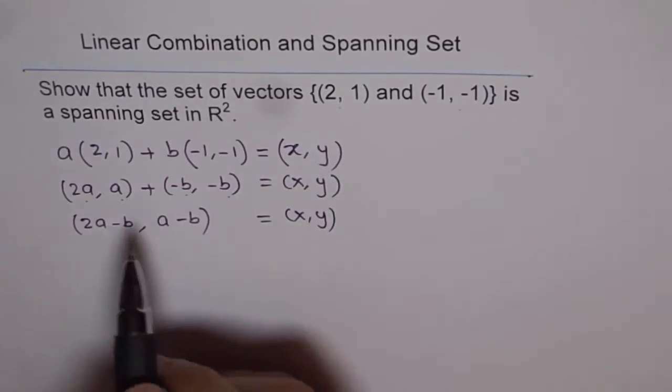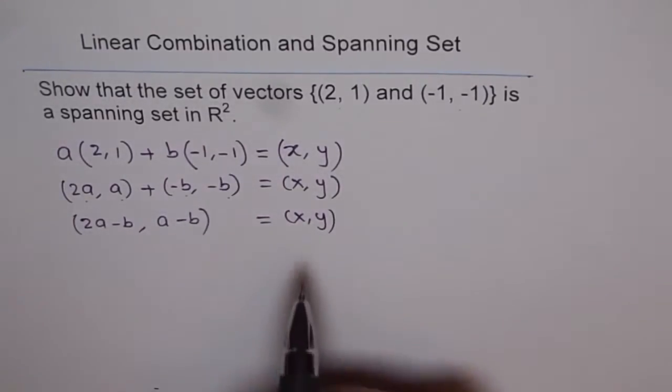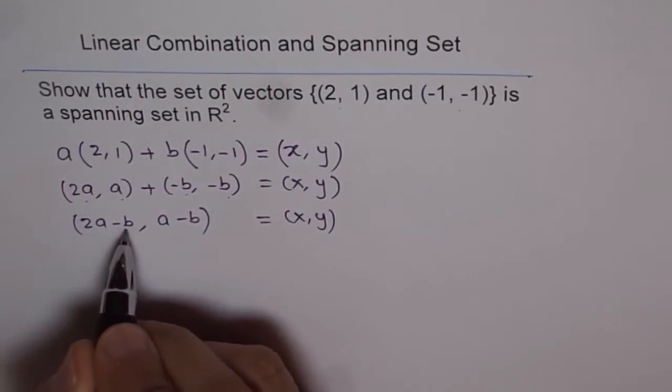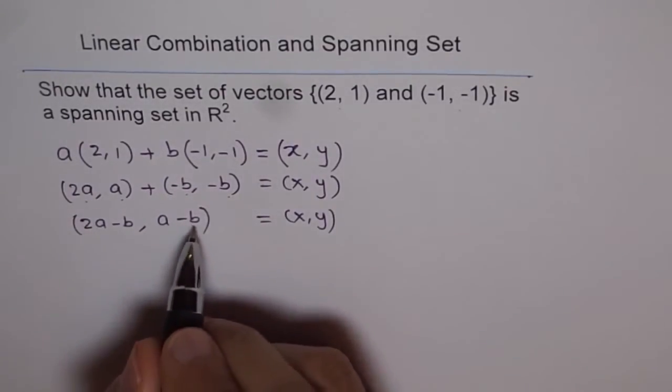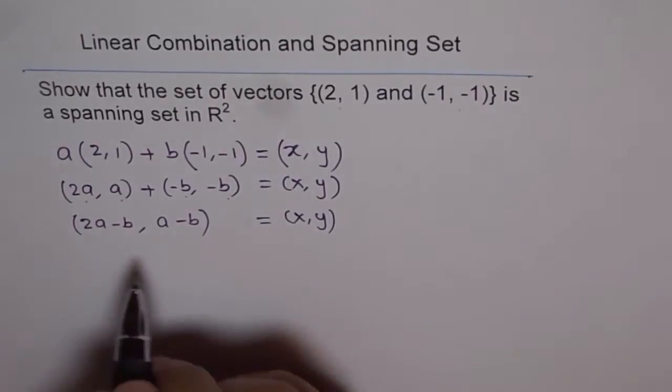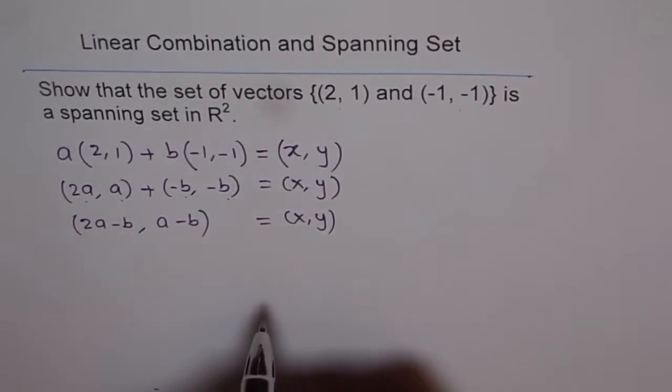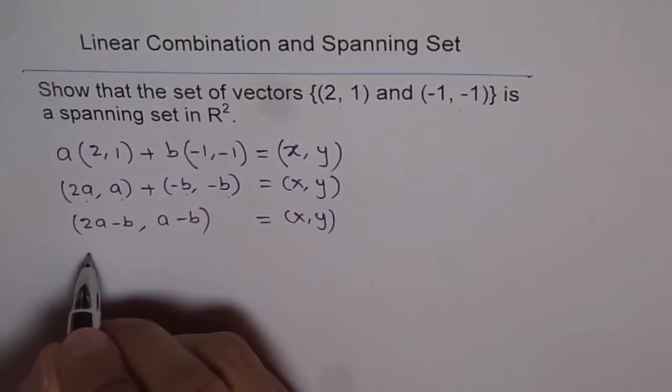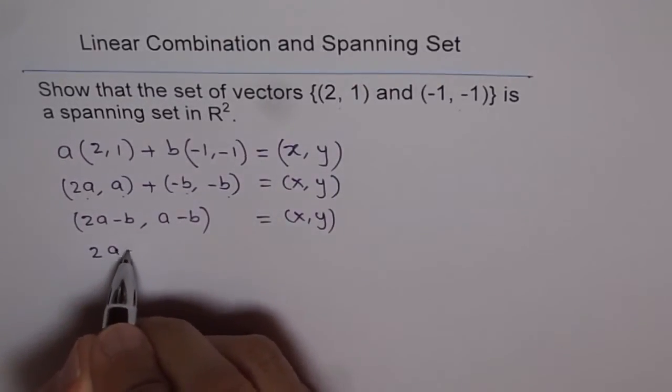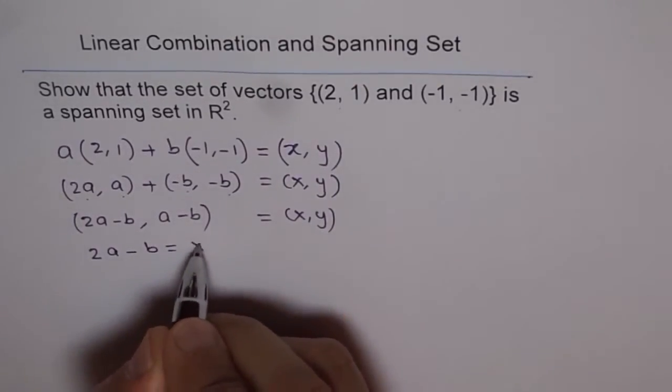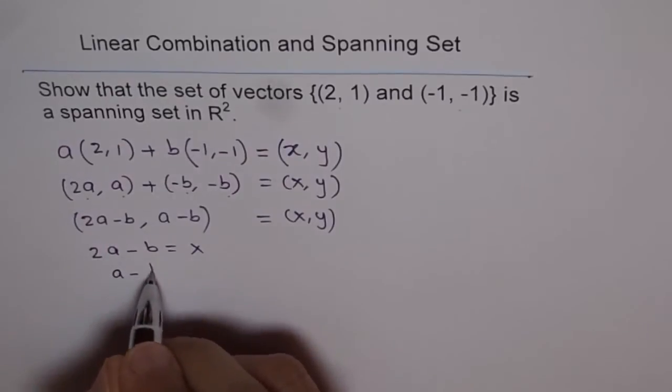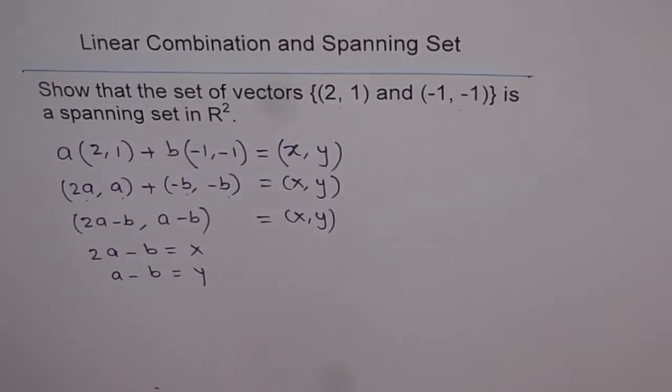So we get (2a - b, a - b) equals (x, y). Now, if this linear combination has to be equal to (x, y), that means that 2a - b should be equal to x and a - b should be equal to y. Their corresponding components should be exactly same.